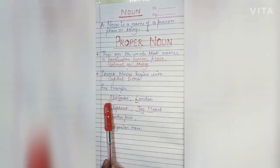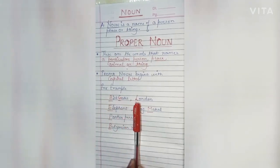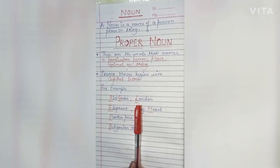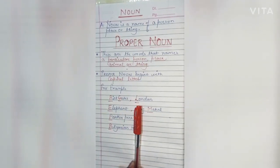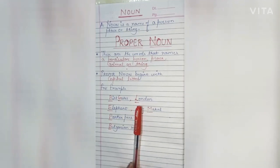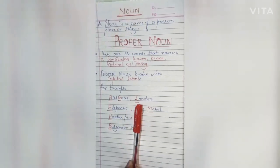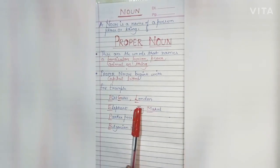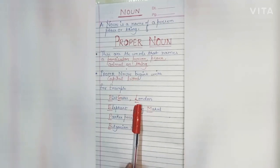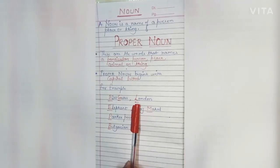The next example is London. London is a specific place. We are not talking about any city in general — we are talking about a particular city, that is London. That is why it is written with a capital letter — capital L.